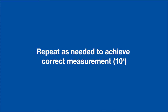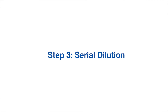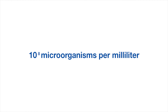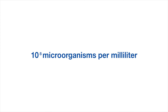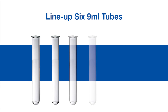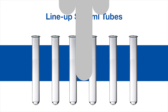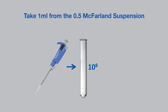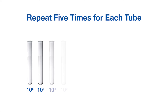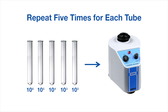When you achieve the correct density, serially dilute the microorganism suspension. The suspension contains approximately 10 to the 8th microorganisms per milliliter, and in our example you only want a concentration of 100 to 1,000 CFU per milliliter. Line up six tubes, each containing 9 milliliters of phosphate buffer. Take 1 milliliter from the 0.5 McFarland microorganism suspension, add it to the first tube of phosphate buffer, vortex the tube, and serially dilute and vortex five more times. Now you finally have the CFU concentration of 100 to 1,000 CFU you are seeking.